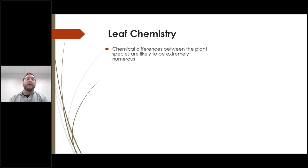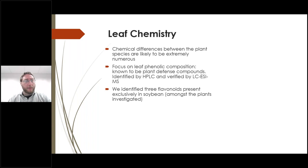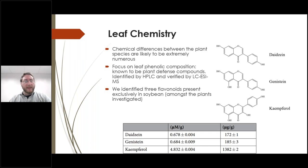That left us with determining whether there were differences in leaf chemistry. To look at differences in the leaf chemistry of four distinct crops was going to be extremely numerous, so we had to narrow down our field of inquiry. We decided to focus on the phenolic composition of the leaves. We were able to identify compounds by HPLC and verified them by LC-ESI-MS. We identified three flavonoid compounds present exclusively in soybean leaves among the four species: daidzein, genistein, and kaempferol. This was somewhat interesting because these were not present in green bean, despite it being very closely related to soybean.